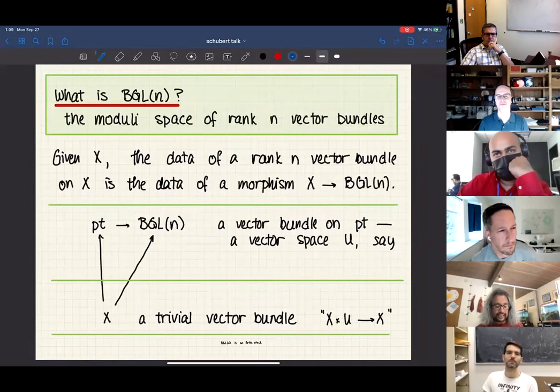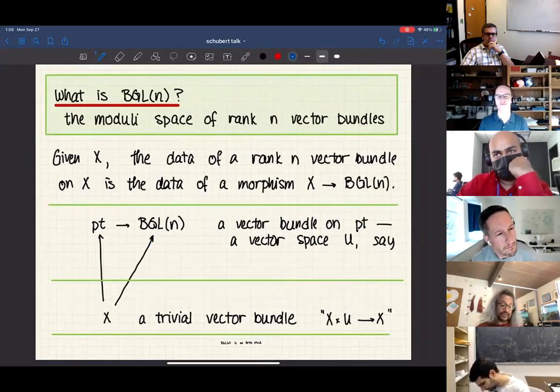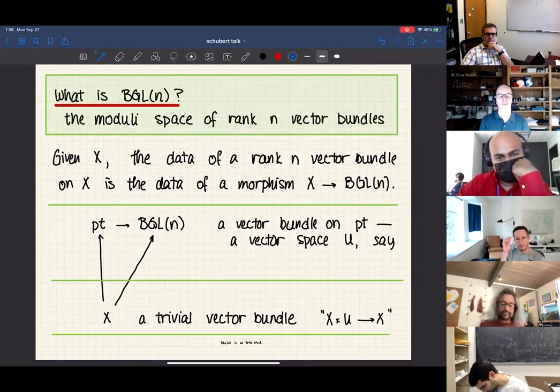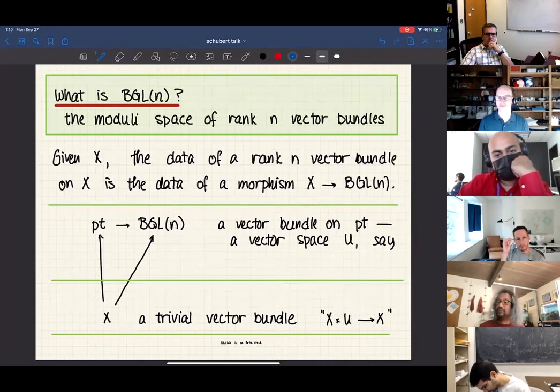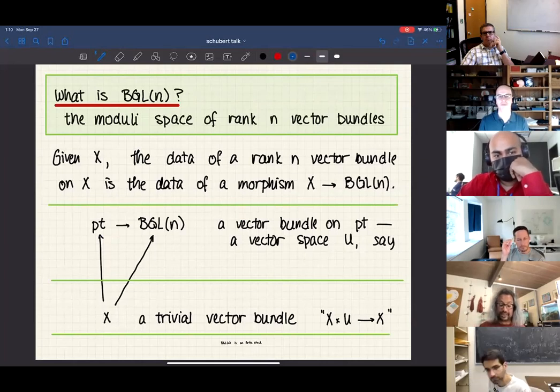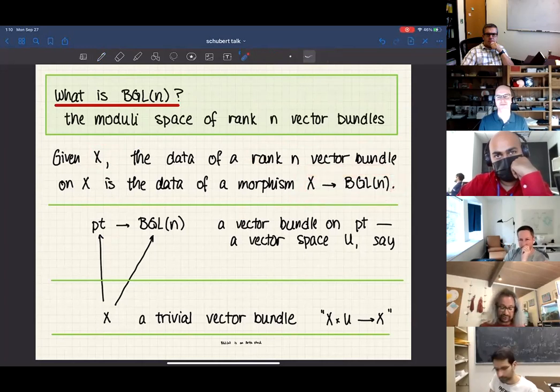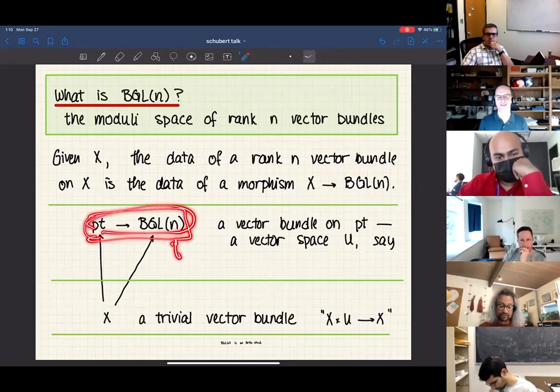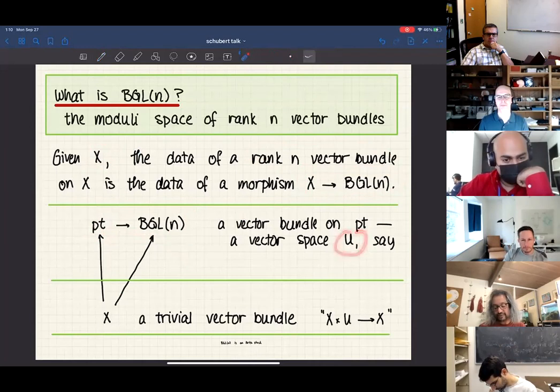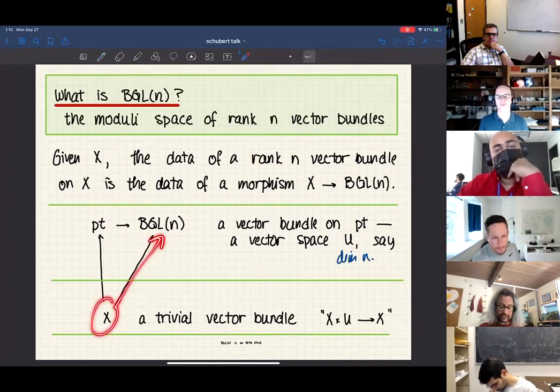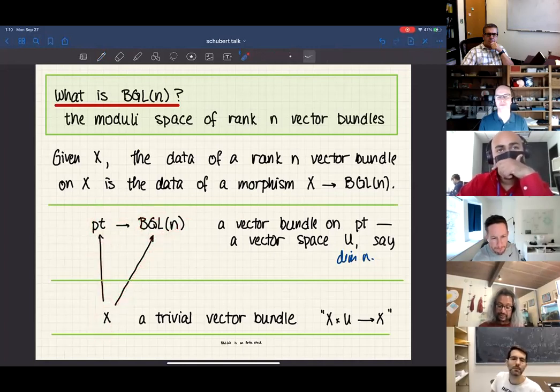What's BGLN? It's the moduli space in some sense of vector bundles. What I really mean is it's a space that tells us what the vector bundles are in any other space. The rank n vector bundles on a space X are exactly the maps from X to BGLN. As an example, if I have a map point to BGLN, a vector bundle on a point is just a vector space.